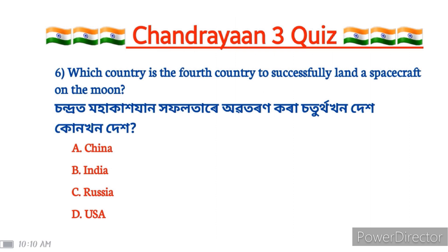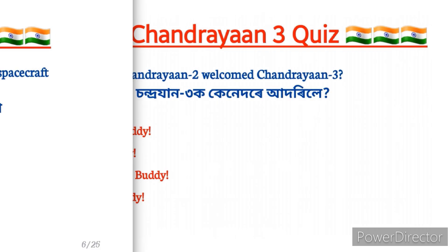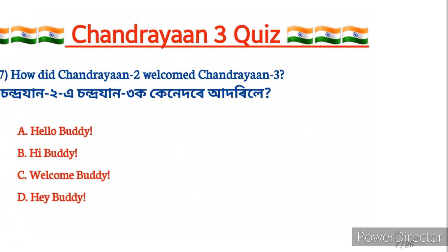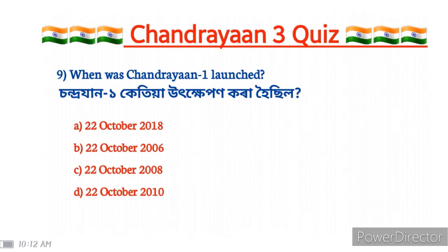India became the 3rd country to successfully land a spacecraft on the moon. The next question is: how did Chandrayaan-2 relate to Chandrayaan-3? And when was Chandrayaan-1 launched?